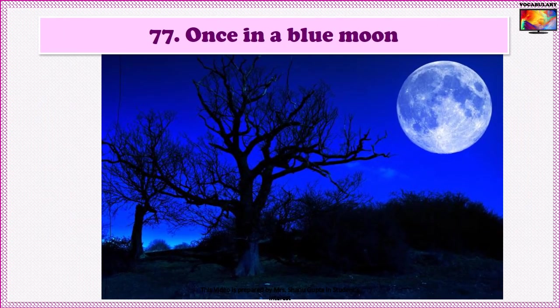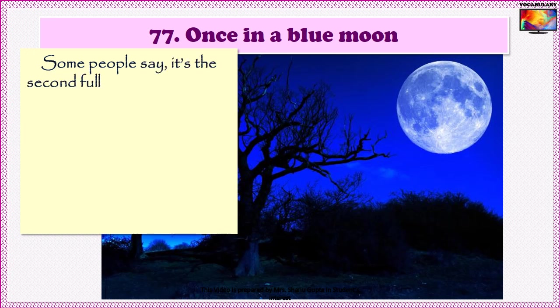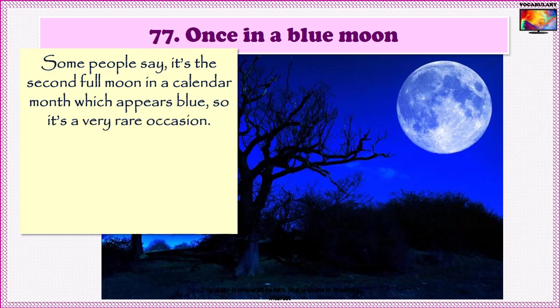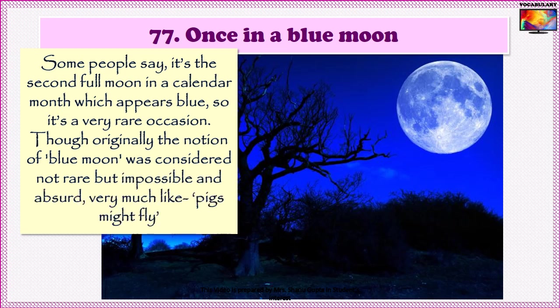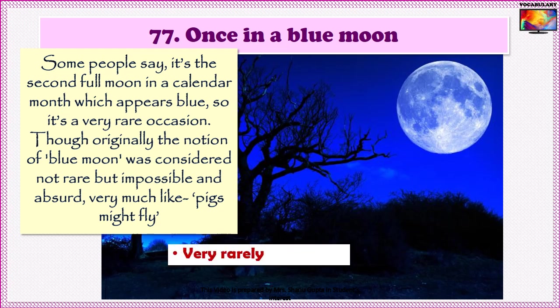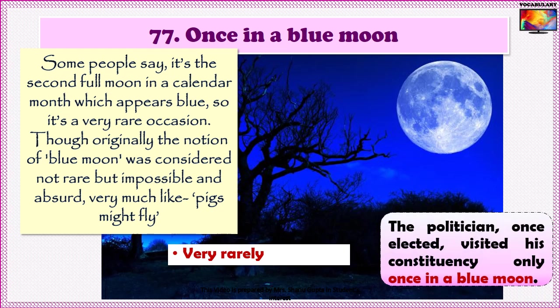Idiom No. 77 is 'Once in a blue moon.' Some people say it's the second full moon in a calendar month which appears blue, so it's a very rare occasion. Though originally, the notion of a blue moon was considered not rare but impossible and absurd — very much like 'pigs might fly.' The contemporary meaning of the idiom 'once in a blue moon' is very rarely. An example: 'The politician, once elected, visited his constituency only once in a blue moon.'